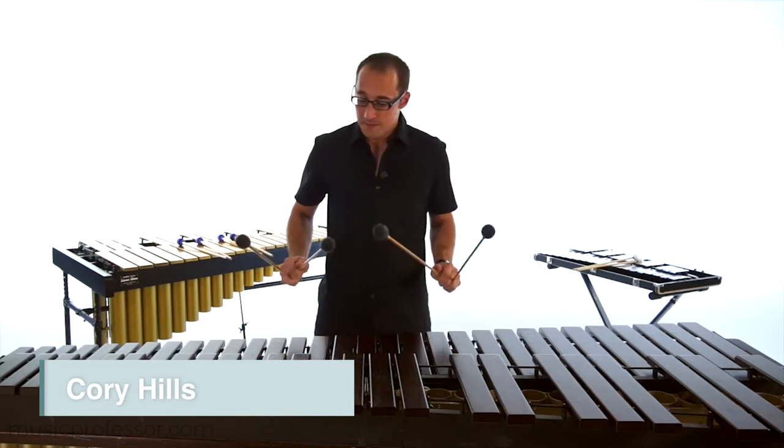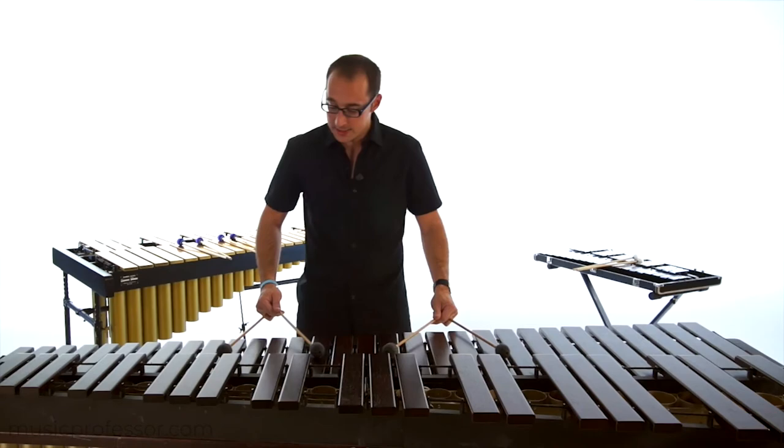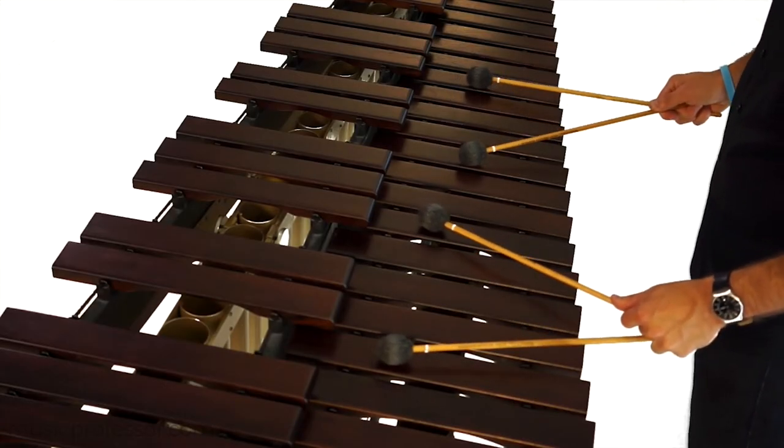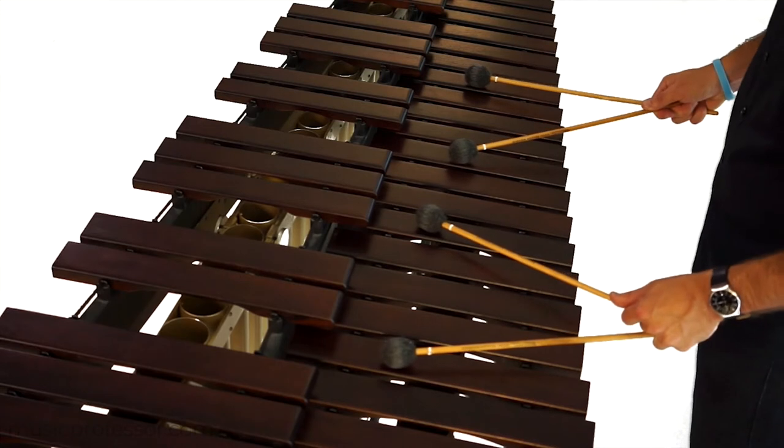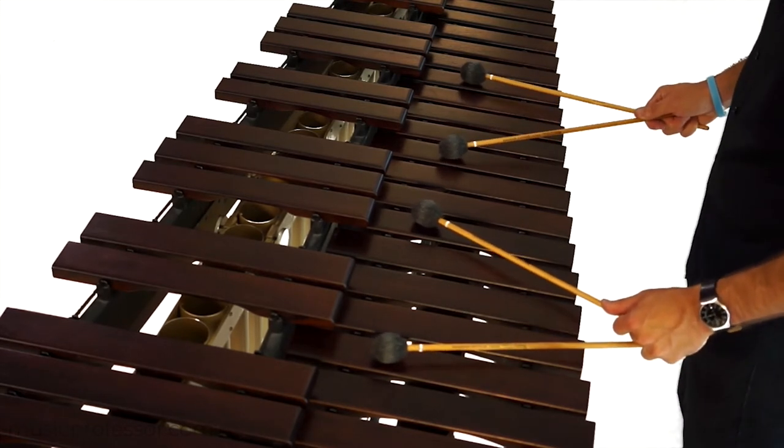One beginning exercise for four mallets would be double stops. By double stops, that's when everything hits at the same time on the marimba. So if you have your right hand set, give your left hand set, put the sticks down on the bars. It helps that way you can kind of feel the surface.